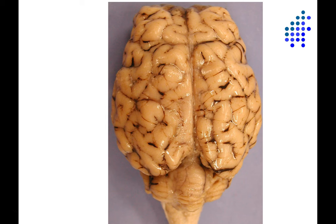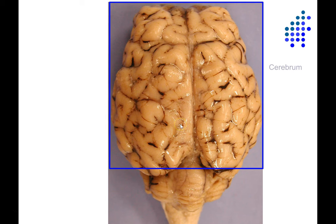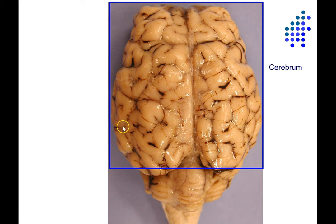Let's start with the dorsal view — looking at the brain from above. The cerebrum is the large, anterior-most part of the brain. It's covered by the cerebral cortex, a thin layer of gray matter. It's all crinkled and folded up. Where it folds in, that's called a sulcus. Where it folds out, that's called a gyrus.